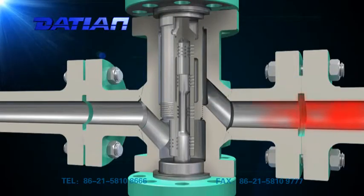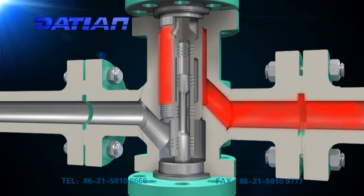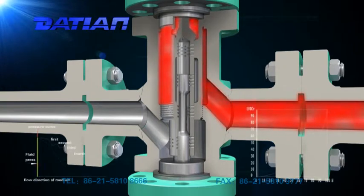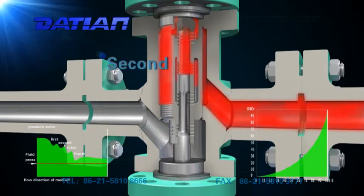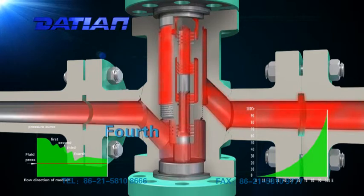When the valve is at work, the media flows into the first throttling sleeve from the upper valve chamber for pressurization. Then it's repeated in the second, third, and fourth throttling valve in turn.